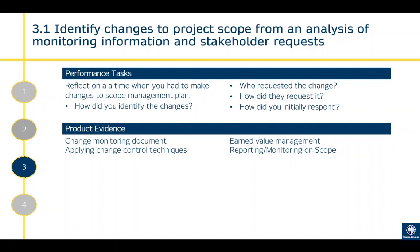Criterion 3.1 is to identify changes to project scope from an analysis of monitoring information and stakeholder requests. You are monitoring any requests from stakeholders — anyone involved in the project — for a change. People working on the project might identify a change, particularly operational teams completing activities who might identify something has gone wrong. Engineers or technicians with specific technical knowledge might say this doesn't work technically and a change is needed. You are identifying and monitoring requests early on.